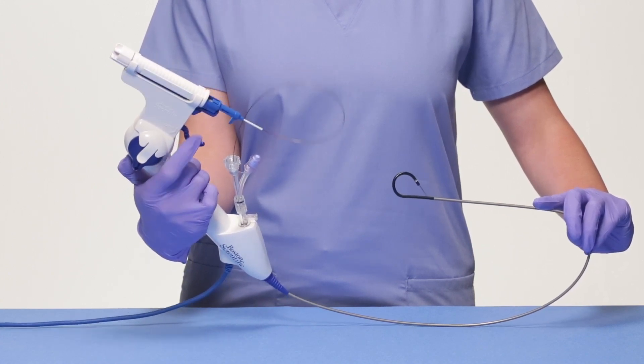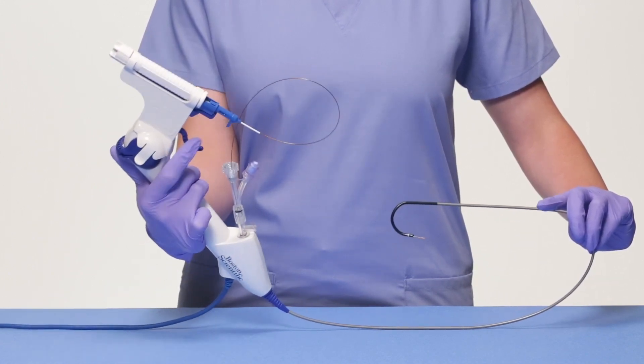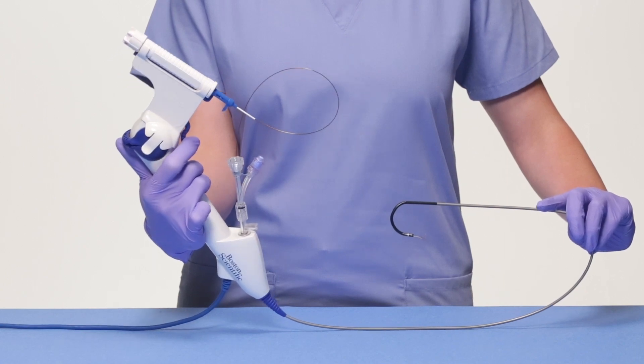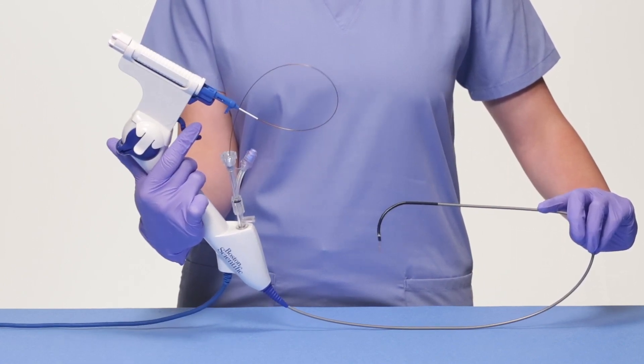When assembled, the LithoVue Empower device will allow for simultaneous scope deflection and basket actuation, all with a single hand.